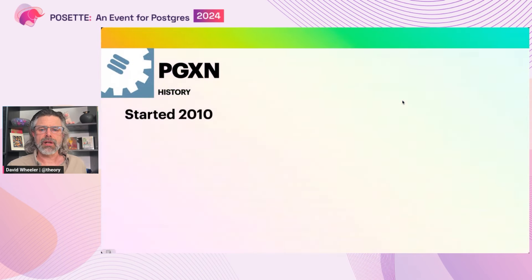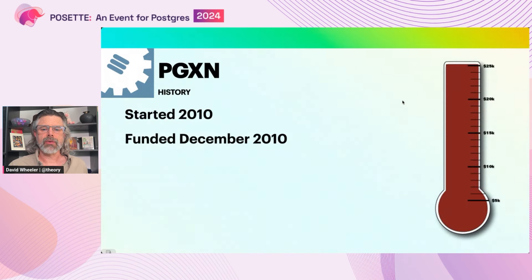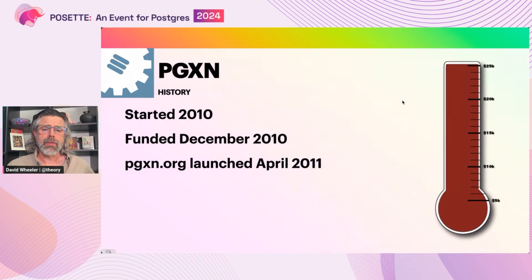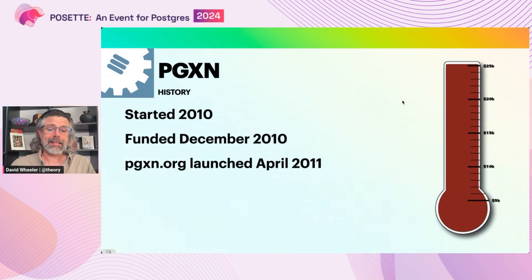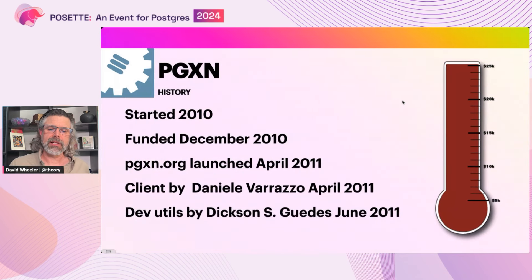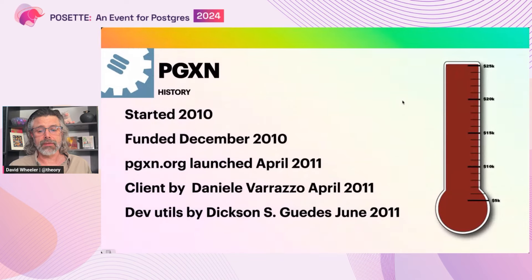I launched the project in 2010, around the same time Dimitri started developing formal extension support. And by December, the little fundraiser I'd set up had met its goal and it was time to get to work. The site PGXN.org launched in April of 2011 with the first few extensions in a public REST API. Meanwhile, Daniel Varazzo took it upon himself to write the command line client — he wrote it in Python, deftly demonstrating that any language could use the APIs and interfaces. And almost to prove the point, Dixon Guedes released a suite of devutils written in Ruby in June 2011. The community involvement was really great.